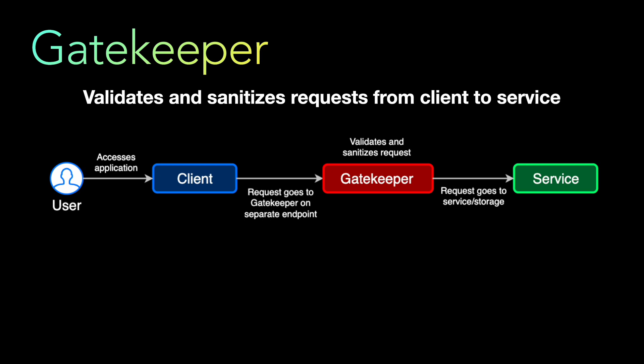The gatekeeper validates and sanitizes the request. Your service has API endpoints or URIs, but those are not exposed directly to the client — this avoids SQL injections or DDoS attacks. A proxy layer is placed in front of the service, and the gatekeeper, a lightweight or separate application, validates and sanitizes the request. If the request is invalid, it is returned from the gatekeeper itself without reaching the service. Only valid requests proceed to the service.